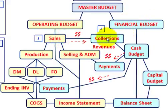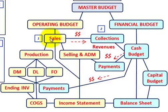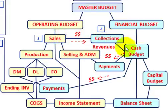Those collections really go into our cash budget under the financial budget. So for our budgeting, we have to determine our sales budget under the operating budget and also the revenues or collections on sales, which go into the cash budget.